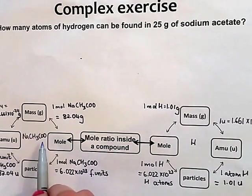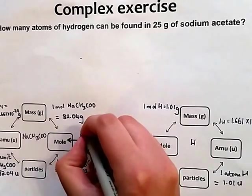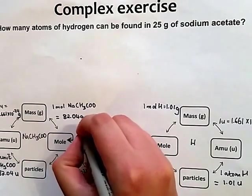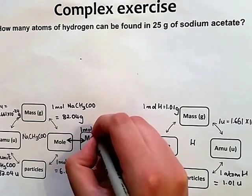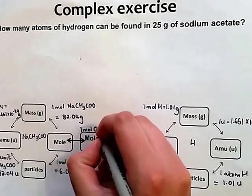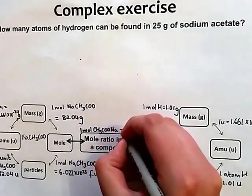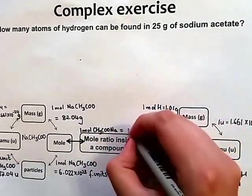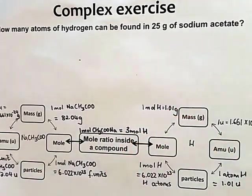Per mole of sodium acetate, how many moles of hydrogen do we have? And that's what we fill in here. Per 1 mole of NaCH3COO, we have 3 moles of hydrogen.